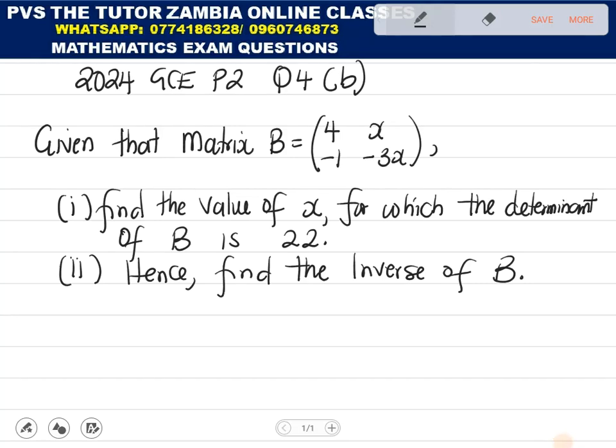Hello students. This question is coming from the 2024 GCE Paper 2, and this was question 4B. It was saying, given that the matrix B is equal to 4, x, negative 1, and negative 3a, find the value of x for which the determinant of B is 22, and hence find the inverse of B.